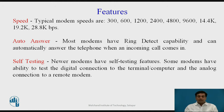Features of modems: The first feature is speed — typically modem speeds are 300 kilobits per second, 600, 1200, up to 28.8 kilobits per second. The auto-answer feature means most modems have ring-detect capability and can automatically answer the telephone when an incoming call arrives. The self-testing feature — newer modems have the ability to test the digital connection to the terminal or computer and the analog connection to a remote modem.